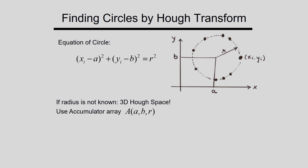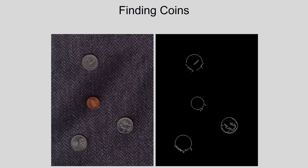If the radius is known, the accumulator has parameters a and b only. If the radius is not known, the accumulator has parameters a, b, and r. As an example, I show detection of coins using the Hough transform. Applying edge detection gives small edge fragments, but applying the Hough transform detects the complete circles corresponding to all coins.